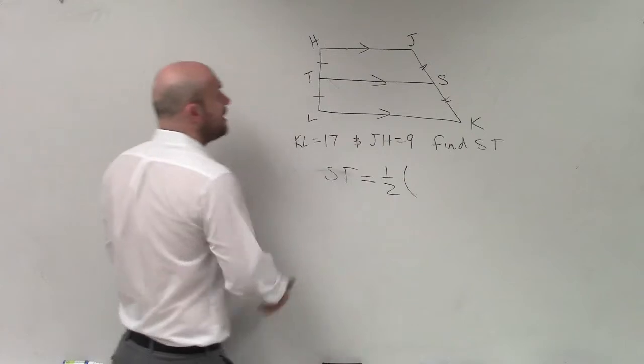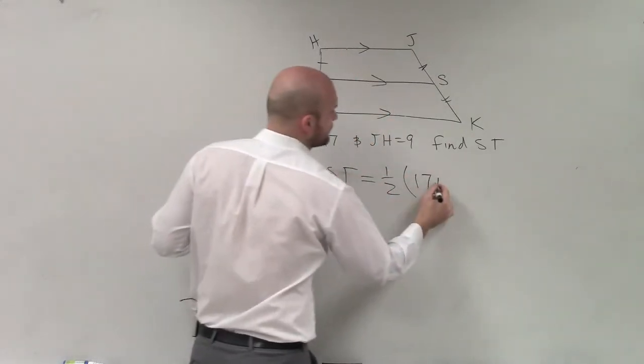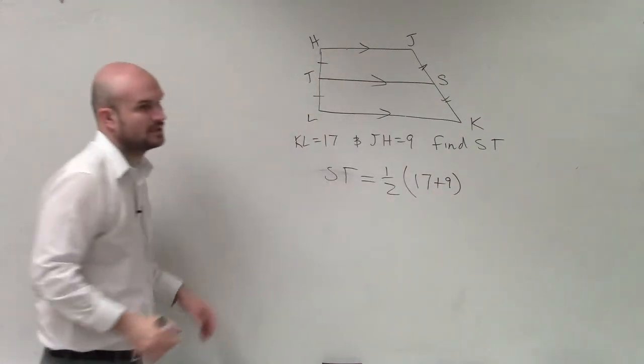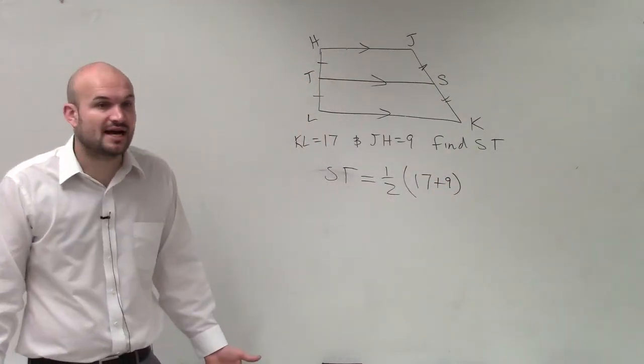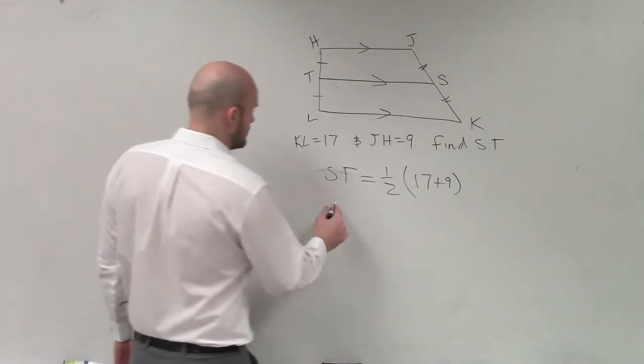So therefore, now all I need to do is add up these sides. Well, KL is 17, JH is 9. So 17 plus 9 is going to be 26. 26 times one-half is 26.